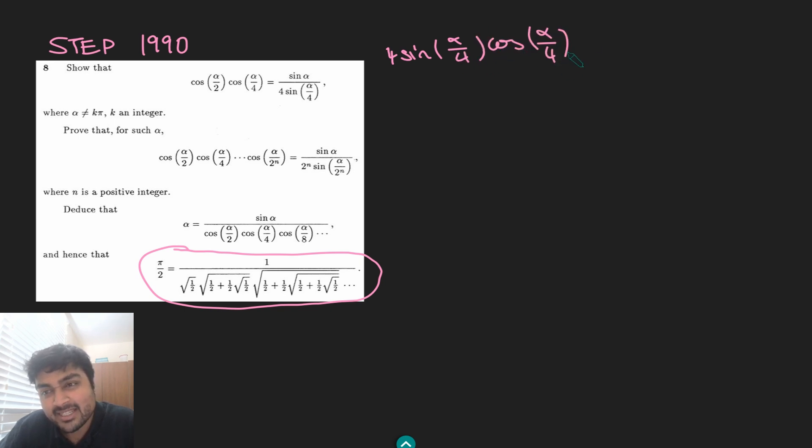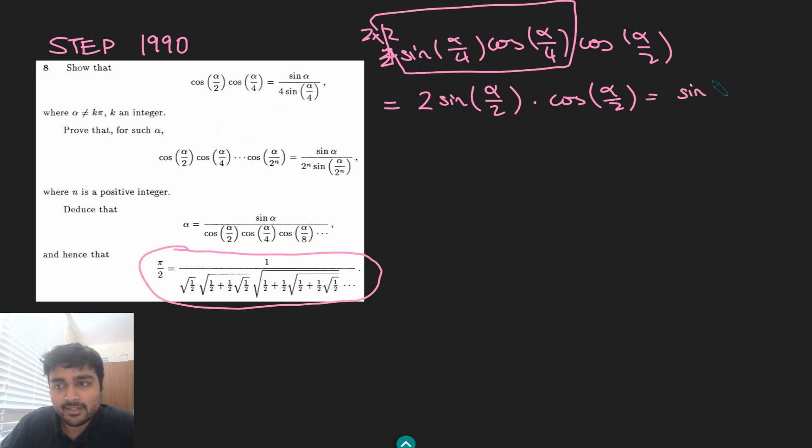And all we have to do here is use our double angle formulae. So if I write this 4 as 2 times 2, 2 sine alpha over 4 cosine alpha over 4 just becomes sine of alpha over 2 using the double angle formulae. So that's using it once and then I can use it again here and this will give me sine of alpha, like so. So that gives me this result when I then divide by 4 sine alpha over 4.